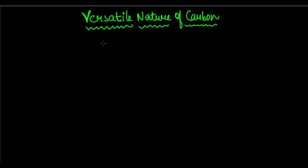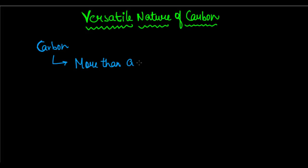Before we look into that, let's try to understand why we say carbon is versatile. Carbon — the element, the very small atom — forms more than a million compounds. Some of which have not even been discovered. So carbon forms millions of compounds and is one of the most versatile elements.